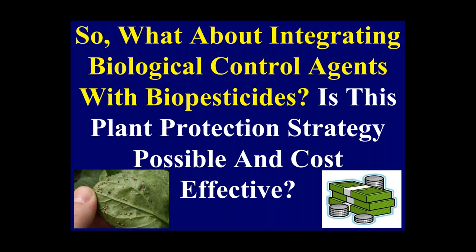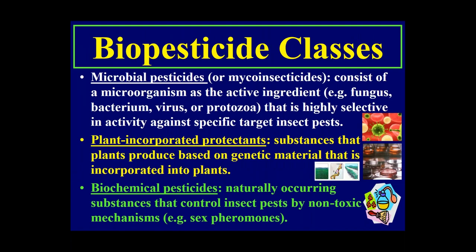Now I want to discuss integrating biological control agents with biopesticides. There are a lot of misperceptions indicating that biopesticides can be used freely in conjunction with natural enemies. There are three classes of biopesticides: microbial pesticides (microorganisms such as bacteria, fungi, viruses, or protozoa, which are highly selective for specific insect pests), plant-incorporated protectants, and biochemical pesticides. I'll focus on microbial pesticides, as they're most relevant in the greenhouse industry.